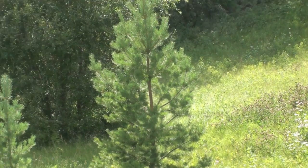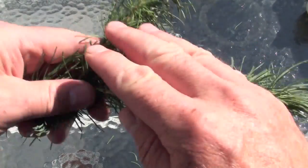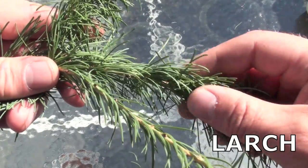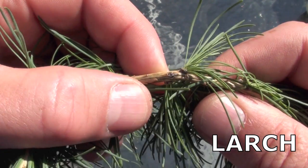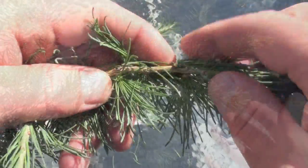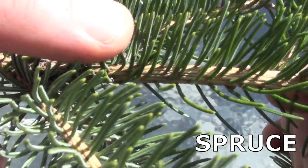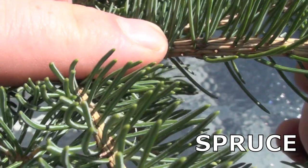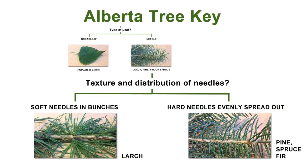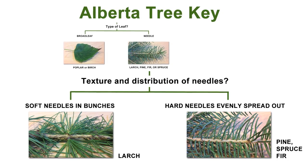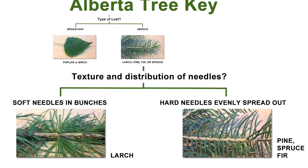Alberta has several different types of trees with needles, and we can use a key to help identify them as well. If we take a close look at a sample from a larch tree, the first thing we notice is the needles are very soft, and they are attached to the stem in bunches. Comparing this to a sample from a spruce tree, there's quite a difference — the needles from a spruce are hard and pointy to the touch, and they are very evenly spread out on the stem. So if we have a tree with soft needles in bunches, we know we have a larch tree. If the needles are hard and evenly spread out, the tree must be a pine, spruce, or fir tree.